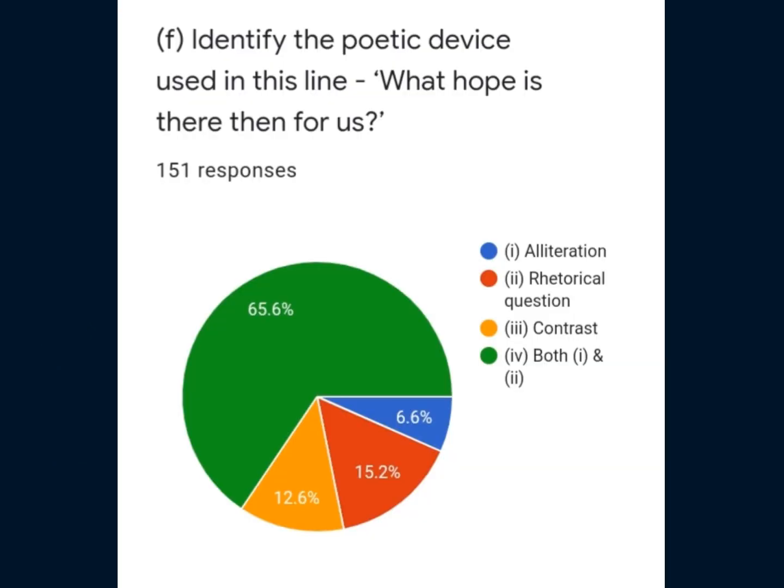This is Question 1, F part. Identify the poetic device used in this line: 'What hope is there then for us?' As we can observe, there is use of two poetic devices: alliteration and rhetorical question. So the correct option is option 4, both 1 and 2.